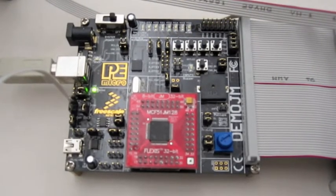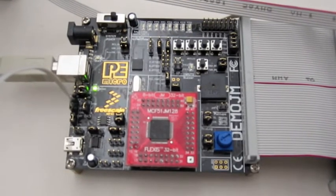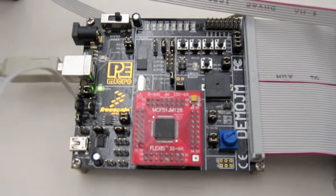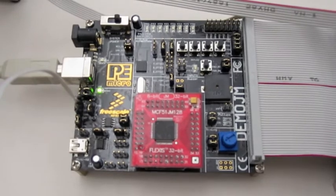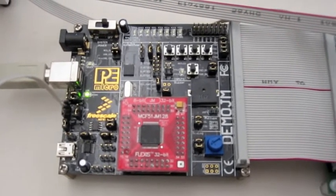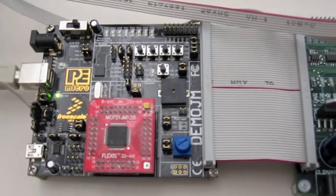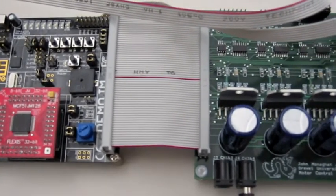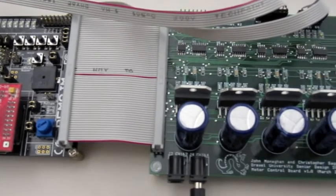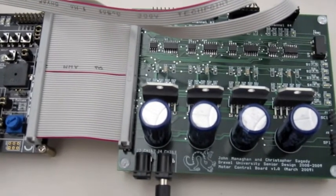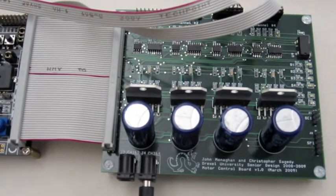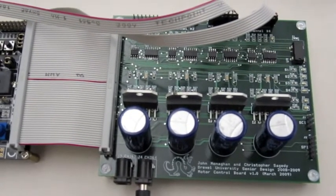Two microcontrollers are used to execute the control algorithms necessary to provide force feedback and to control the endo-wrist. We selected the Freescale ColdFire MCF51JM microcontroller for its onboard USB functionality, which allows data to be sent to a computer to be plotted in real time. We also designed a circuit board that includes all of the electronics necessary to control the DC motors. Each board is capable of controlling up to four motors and interfaces directly with the DemoJM demonstration board.